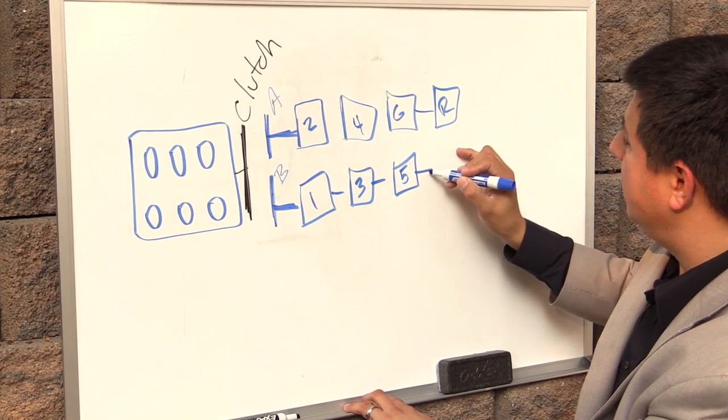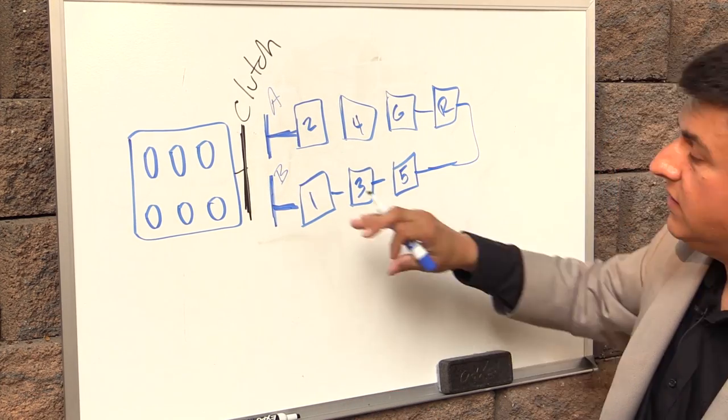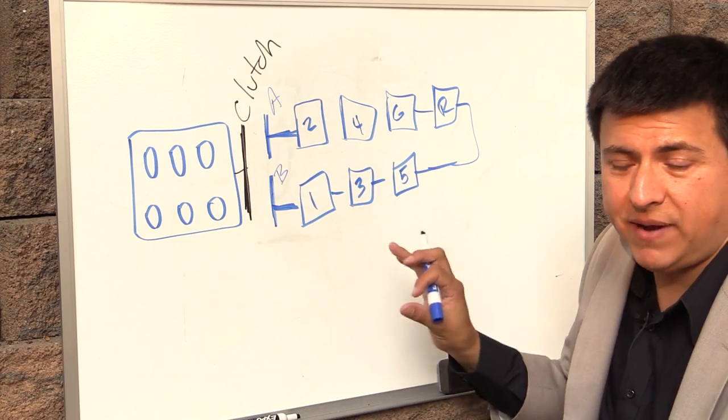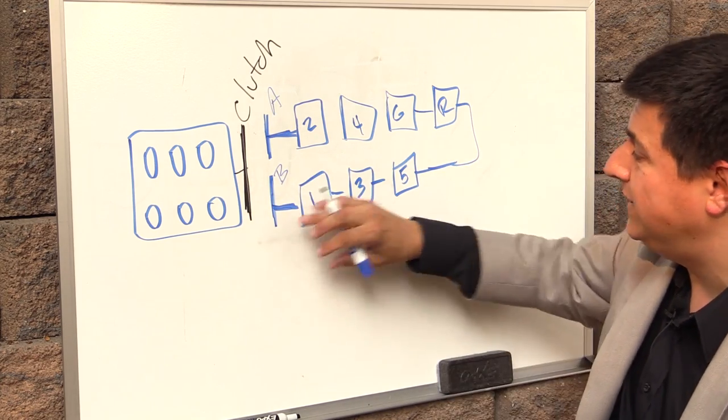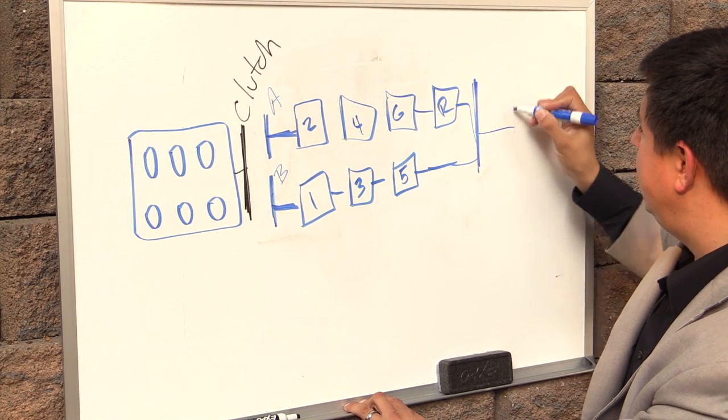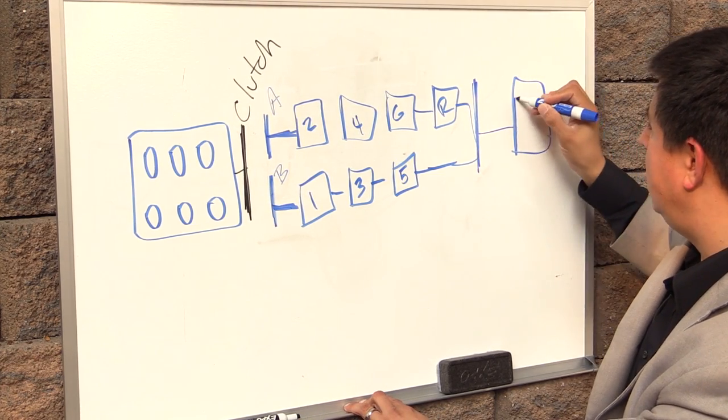So as you can see from this diagram what we really have is two transmissions in parallel inside the same case. One's handling the even gears, one's handling the odd gears. On this side they have a common output that connects them to the wheels on the car.